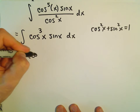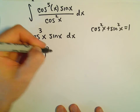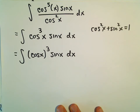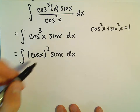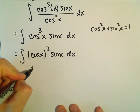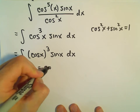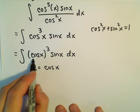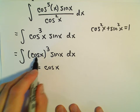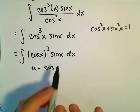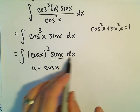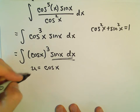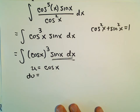This is just cosine of x to the third. I always like to write it that way — for some reason it makes me happy, it looks clear to me. So I'm going to let u equal cosine x — the thing being raised to the power, basically. And sine x dx is hanging out there, so I think that's a good appropriate u-substitution.